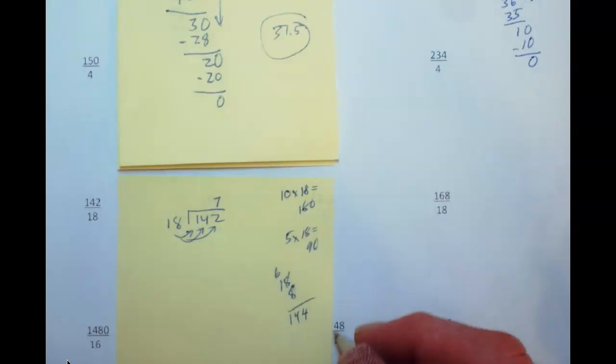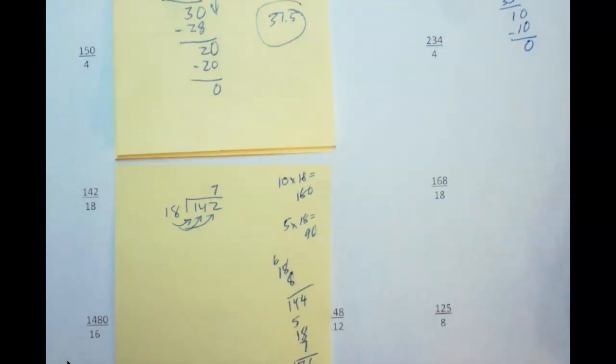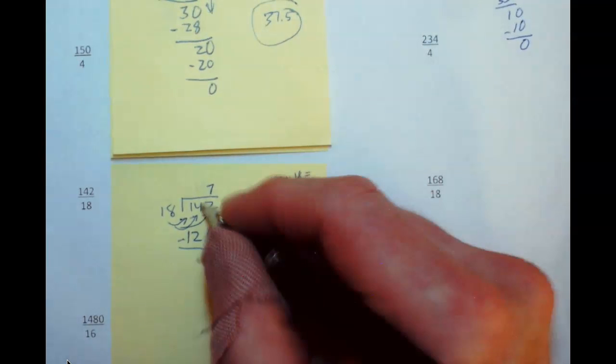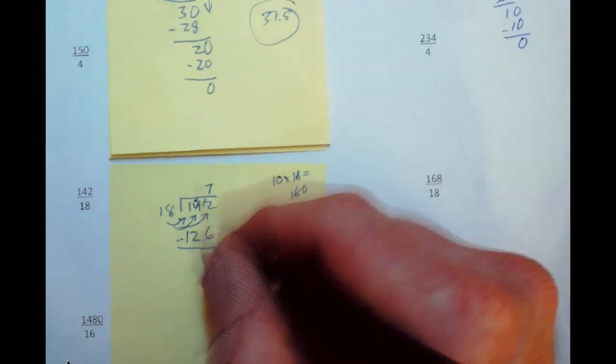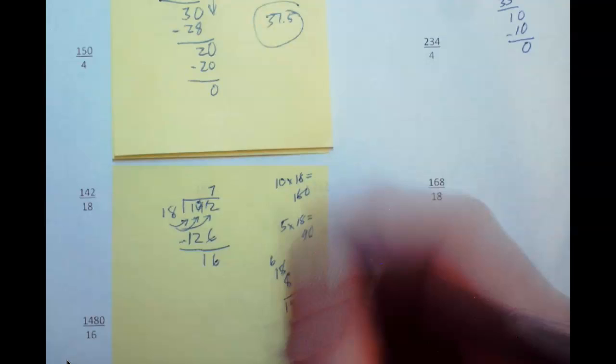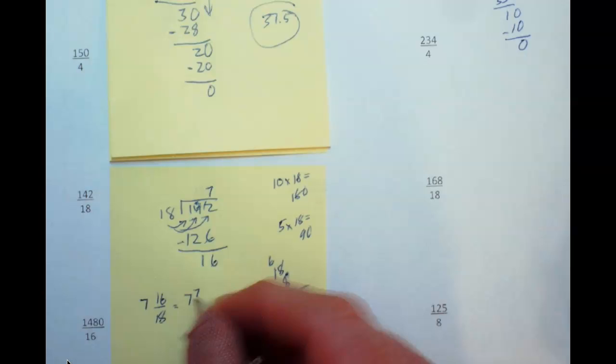So let me go ahead and figure out what 7 times that is. 7 times 18, 7 times 8 is 56. 7 times 1 is 7 plus 5 is 126. So 126, subtract that out, you trade here, 12 minus 6 is 6, this is number 3, 3 minus 2 is 1. We have a total of 16 left over. So the developing student could say that the answer is 7 and 16/18ths, which is the same as 7 and if we divide these by 2 we could call that 7 and 8/9ths.